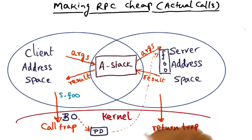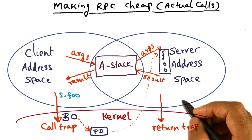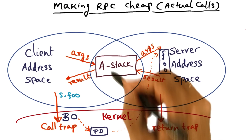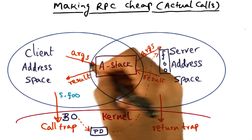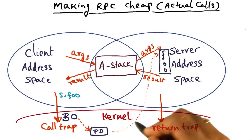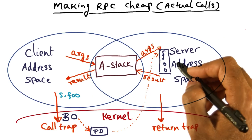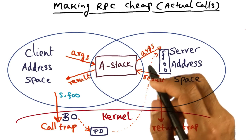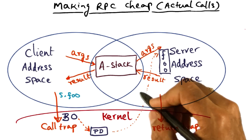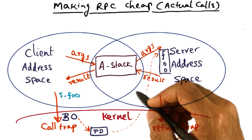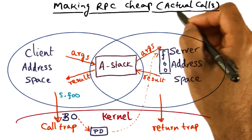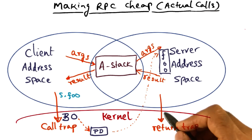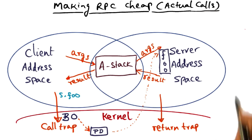The important point to notice is that the copying through the kernel that used to happen is now completely eliminated, because the arguments are passed through the A stack into the server, and similarly the results are passed through the A stack into the client. So let's analyze what we've accomplished in terms of reducing the cost of the RPC in the actual calls being made between the client and the server.